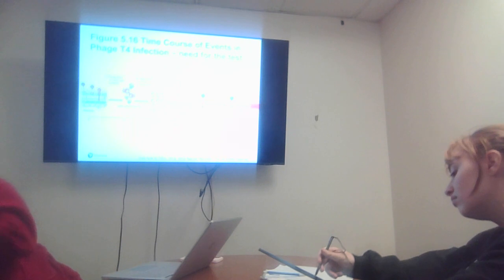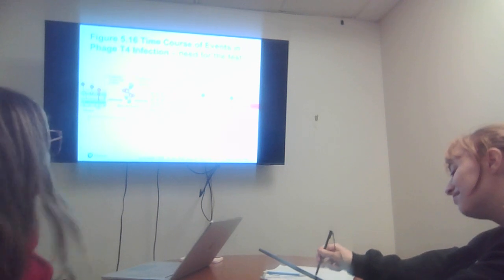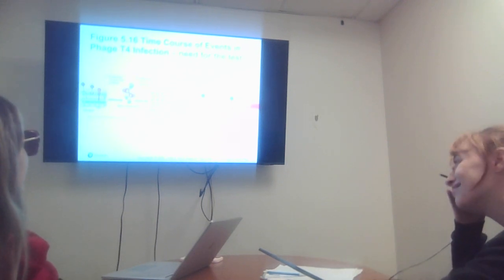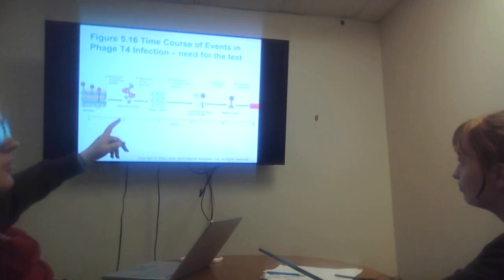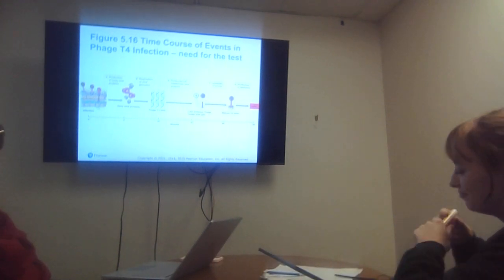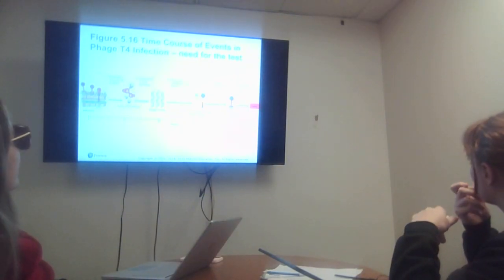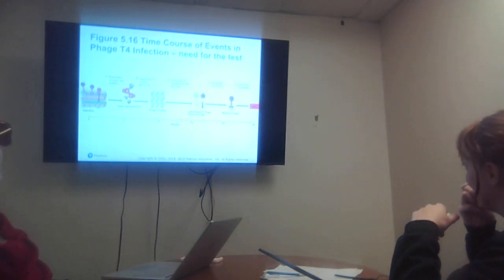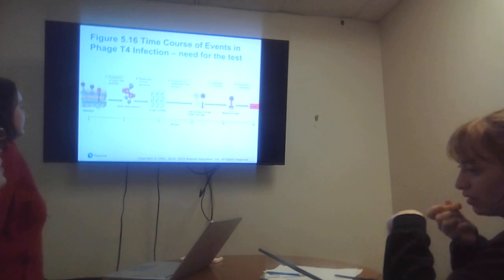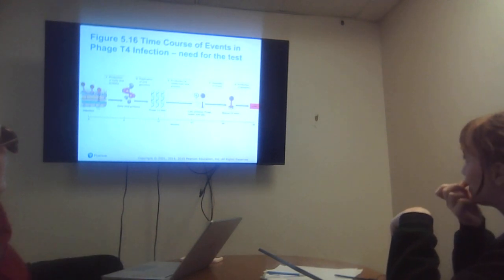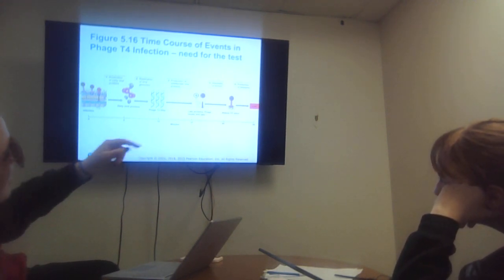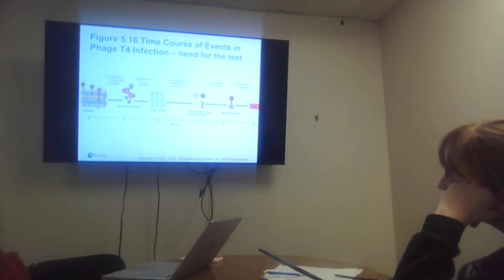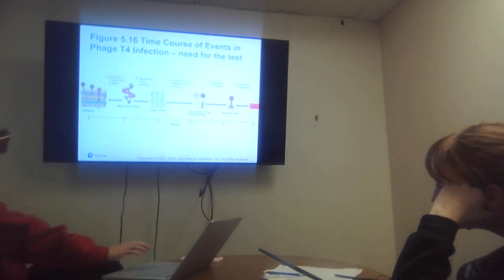The time course of events in phage T4 infection, which we do need to know for the test. Start with infection. Production of early viral proteins is first. Then replication of the viral genomes into phage T4 DNA. Then production of late middle viral proteins, which is the phage heads and phage tails. Then the virions assembled to make a mature T4 virion. Then production of the lysosome which causes cell lysis. It takes 25 minutes.